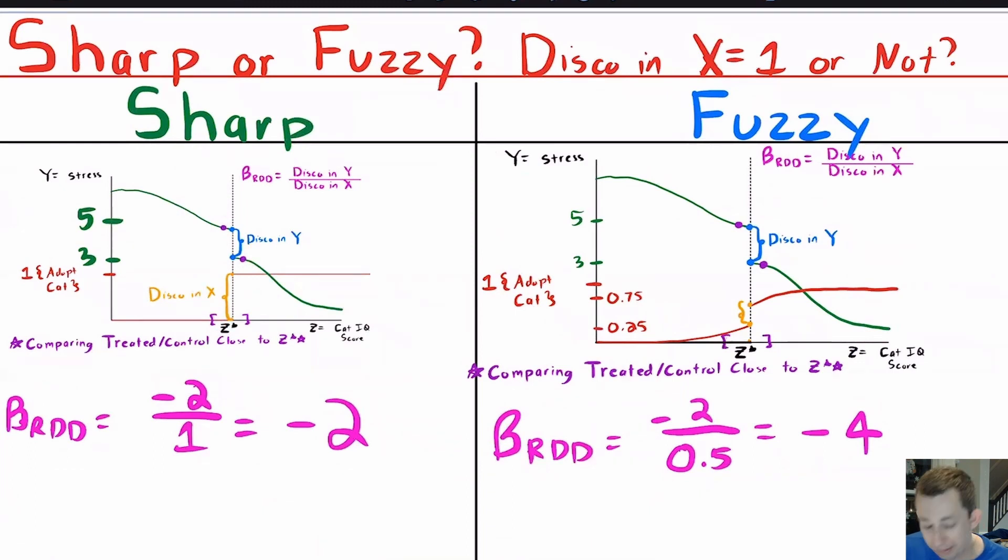If that does not happen, maybe the adoption agency is kind of soft about this threshold. So if you get like a 68 and the passing score is a 70, you missed it by two points, maybe you can convince the agency that even though I failed, I know enough where you should let me adopt this cat and the agency will say yes. And maybe there are some people who just barely pass this cat IQ test who say actually, it's nice that I pass, but I don't actually want to adopt a cat. So the treatment status might not go from zero to one right at the threshold. In this case, maybe it goes from 25% of people who fail still get a cat and 75% of people who just barely pass get a cat. So the compliance rate at the threshold is 0.75 minus 0.25 or 0.5.